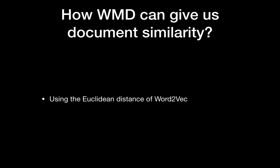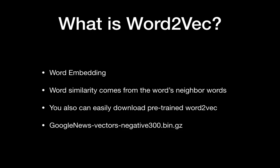How can WMD give us document similarity? It basically uses the Euclidean distance of word2vec. So we need to know what word2vec is. Word2vec is word embedding and the similarity comes from the word's neighbor words. You can also easily download a pre-trained word2vec, something like Google News vectors.